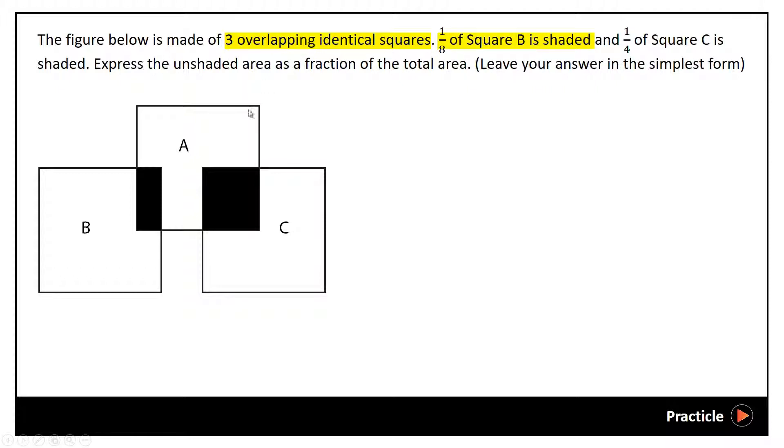1/8 of square B is shaded. So we know that 1 part out of 8 parts of square B is shaded, meaning that the number of parts that are unshaded in square B would be 8 minus 1, which is 7.